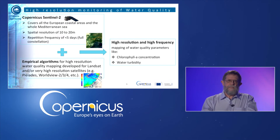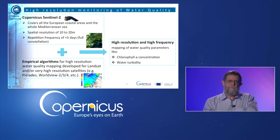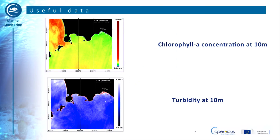The availability of Copernicus Sentinel-2 data opens up new application scenarios, thanks to its coverage of European coastal areas, its relatively high spatial resolution, and its repetition frequency. Empirical algorithms currently used on Landsat 8, which has a spatial resolution of 30 metres, or on commercial very high-resolution satellites, if adapted to Sentinel-2, can provide an operational, high-resolution, and high-frequency monitoring of chlorophyll and turbidity. The objective of the following demonstration is to show how to obtain maps of chlorophyll concentration and turbidity at a spatial resolution of 10 metres.